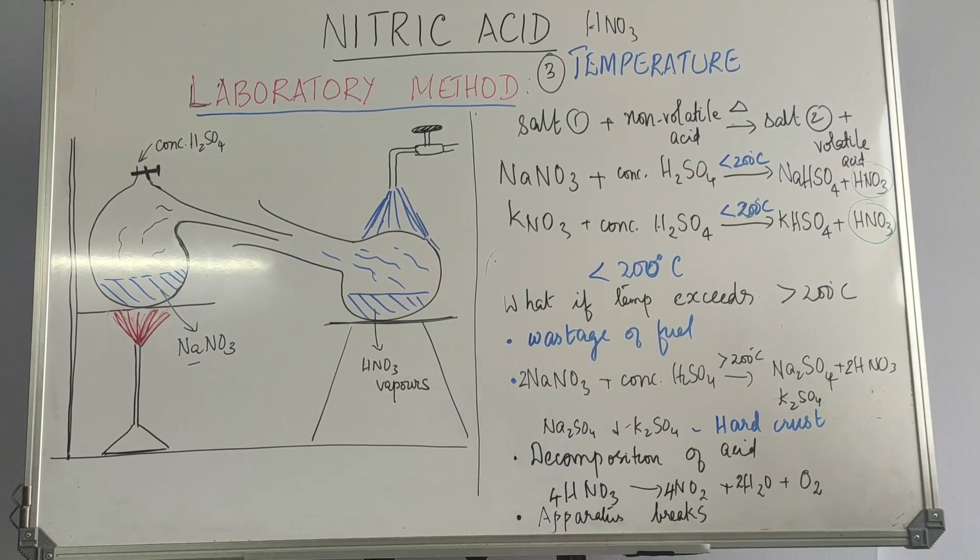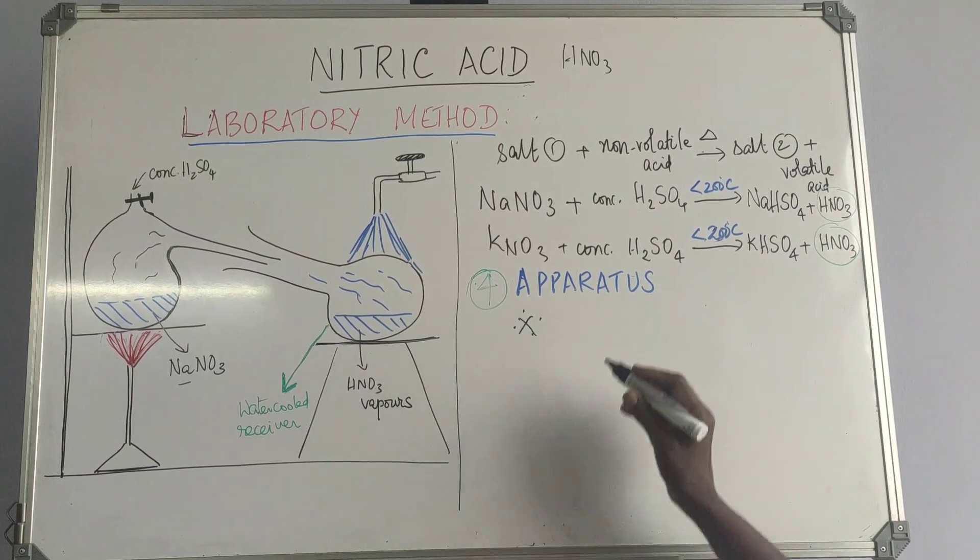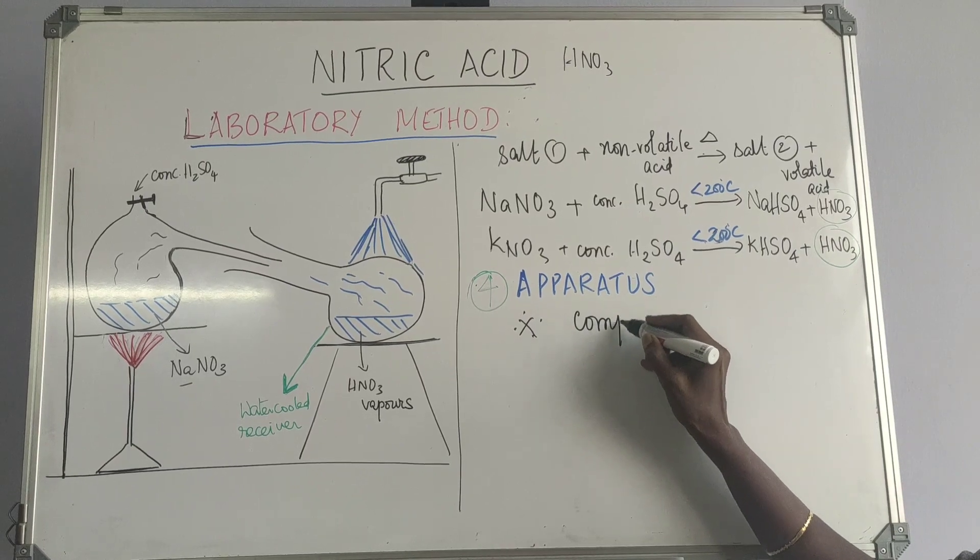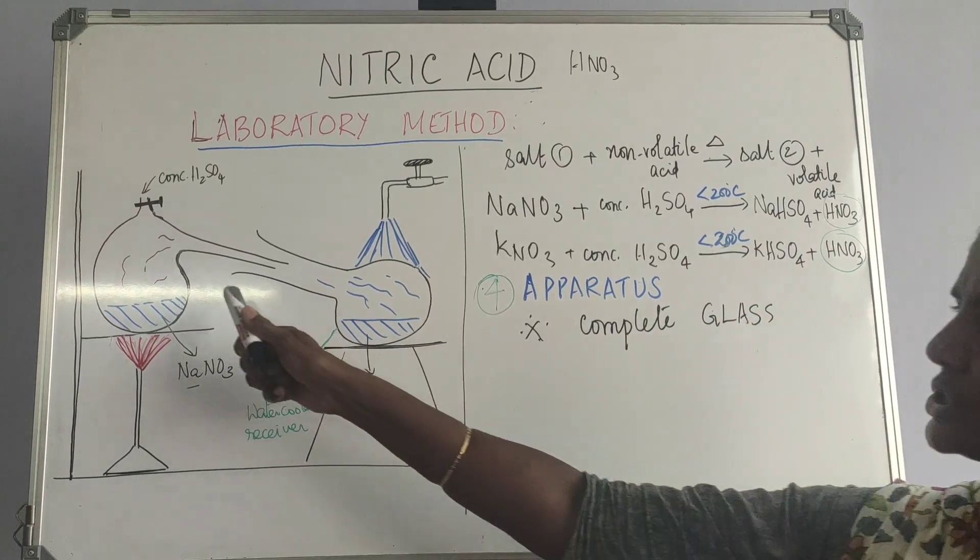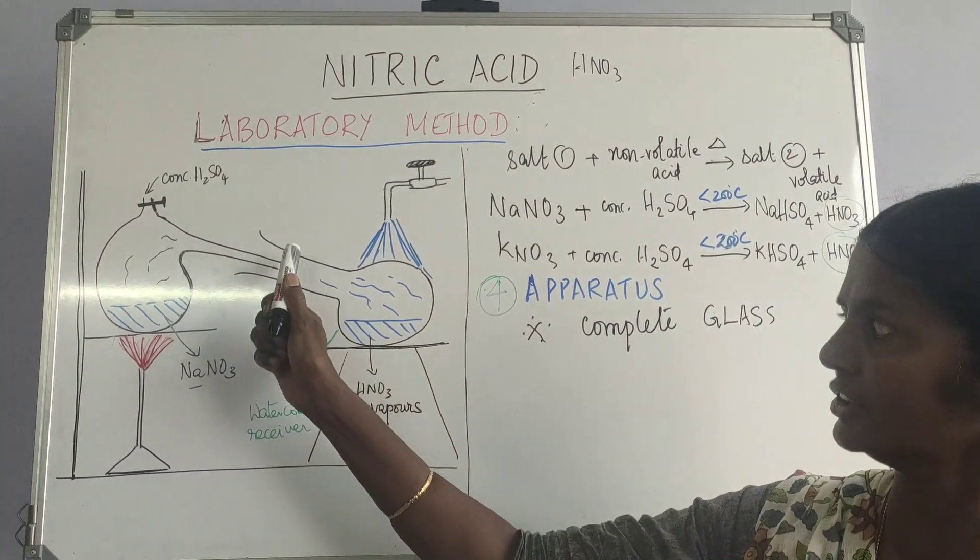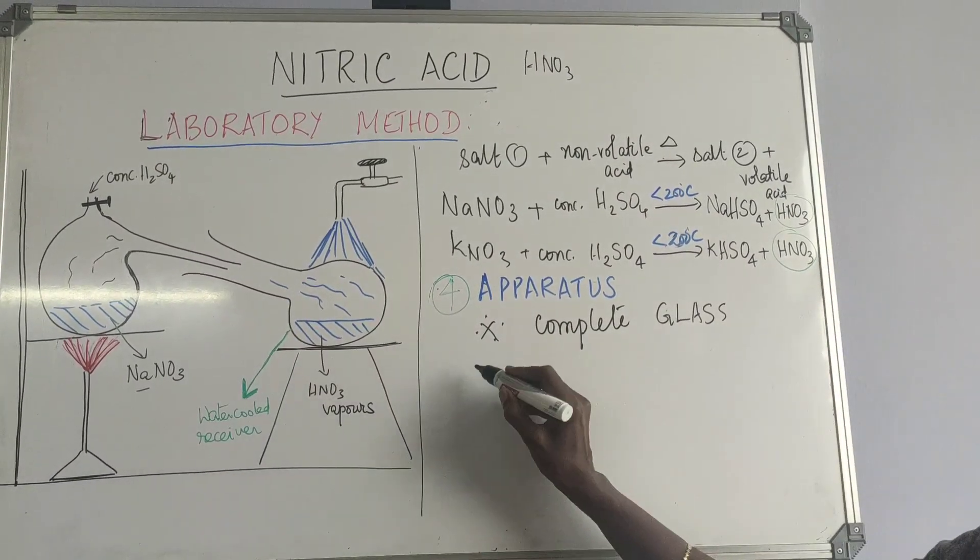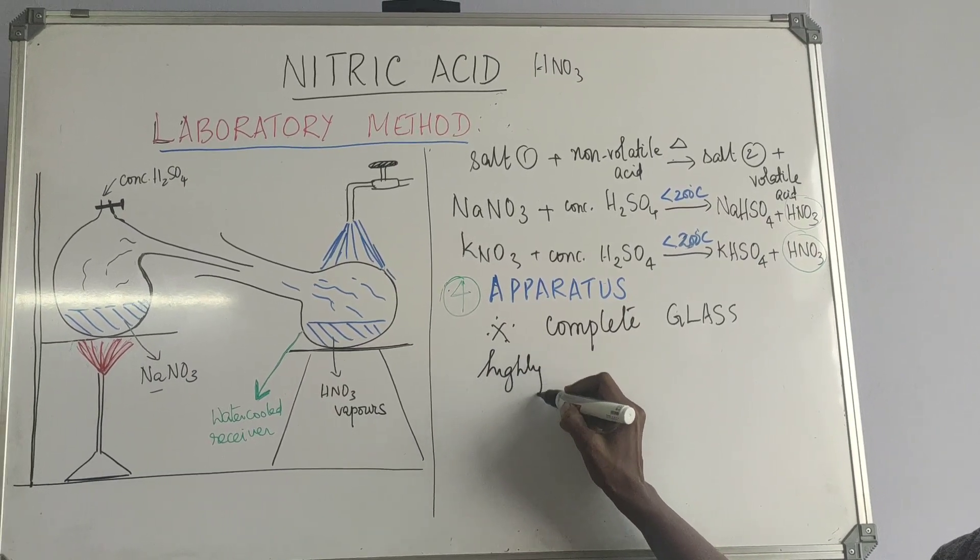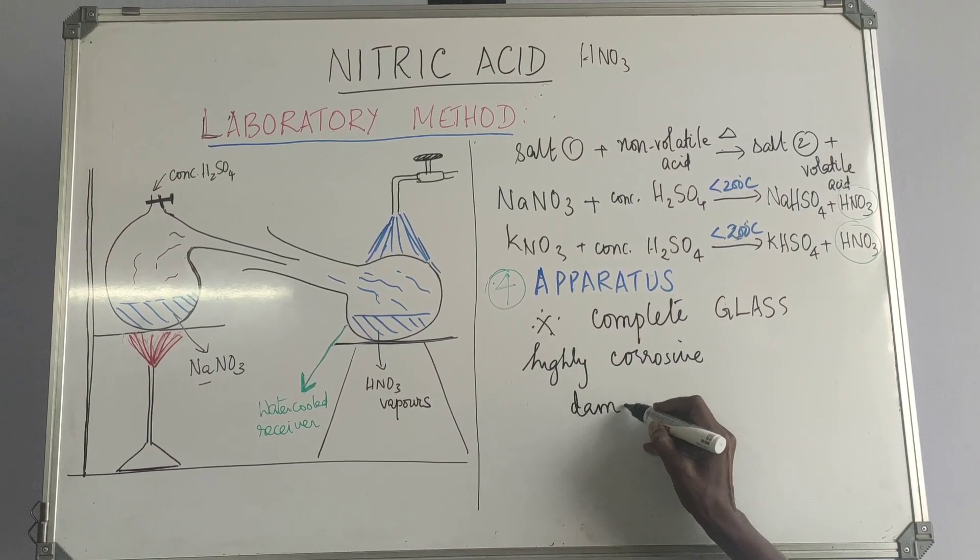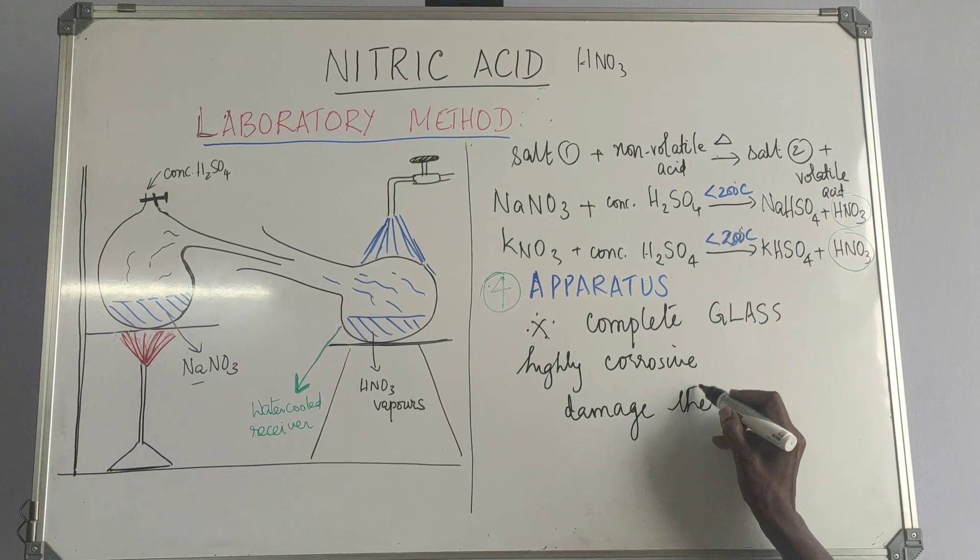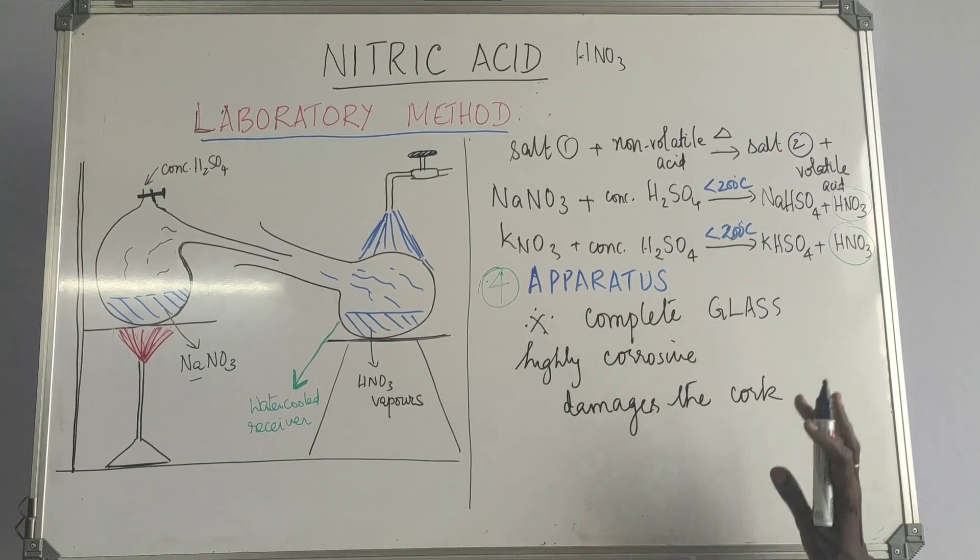So next we move on to the apparatus. Apparatuses, one important thing about this apparatus is, it is completely made of glass. If you notice, usually we would have a glass cork here or it would be closed with a cork. None of the places do you have such things because this is highly corrosive. Nitric acid is highly corrosive. So it can even damage the cork. Damages the cork. So we cannot use anything. It's only made of glass. So that's what the apparatus is about.